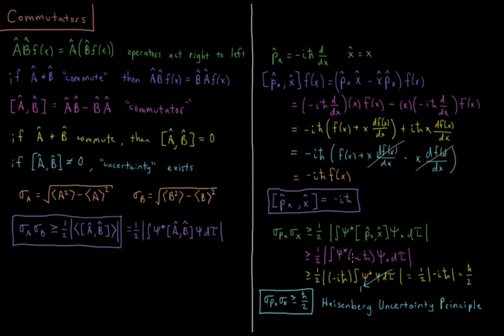All right, so minus i h bar is a constant. We can factor it out. So what we're left with is one-half absolute value of minus i h bar integral psi star psi. If we're working with a normalized wave function, the integral of psi star psi over all space is equal to one. There's a 100% chance of finding the particle somewhere. The probability that it exists somewhere is one.